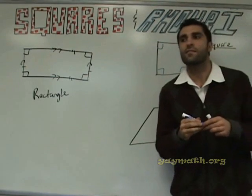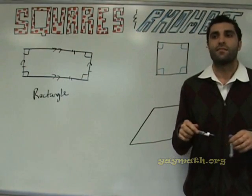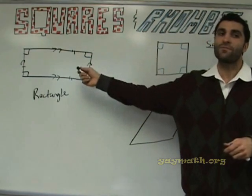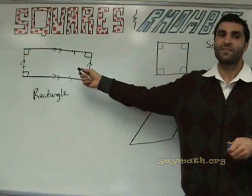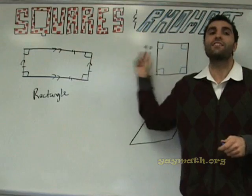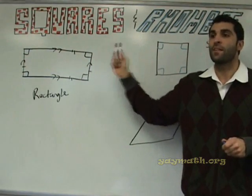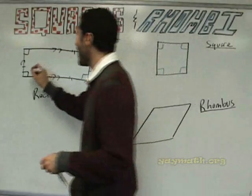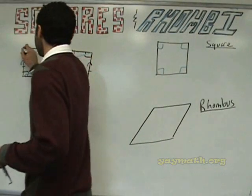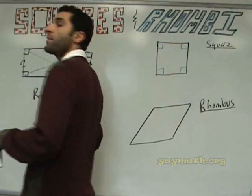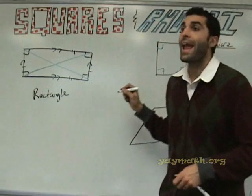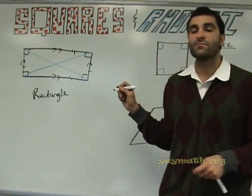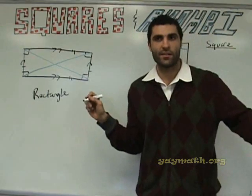What else applies? All sides are equal — all sides are not equal in both, not in both. We're talking about similarities. What about the diagonals? The diagonals bisect each other — and they are congruent. Very good.